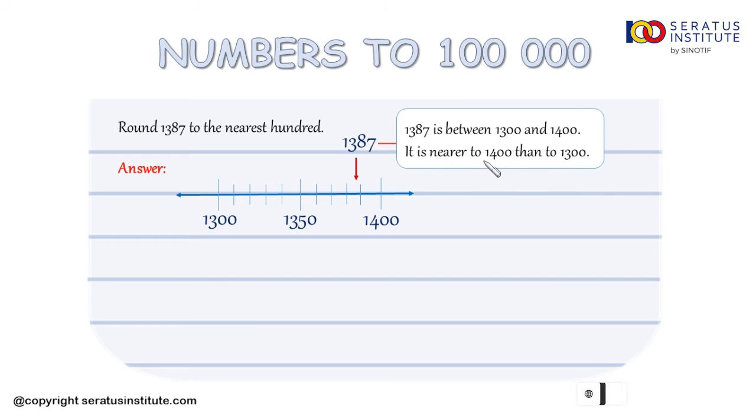It is nearer to 1400 than to 1300. From this we can conclude that 1387 is 1400 when rounded to the nearest hundred. So 1387 is approximately equal to 1400. Okay sobat 100, this is the answer. Is it right? We're done.